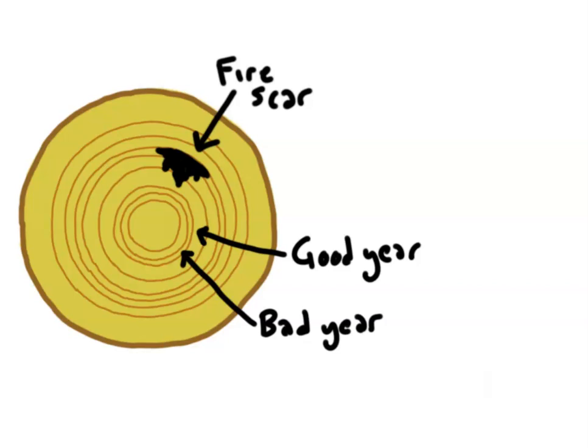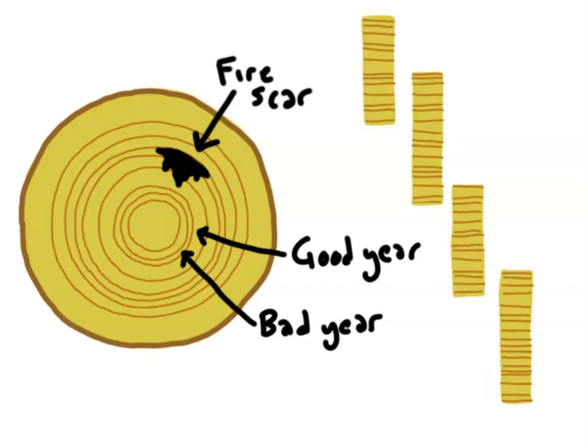Because the pattern of thick and thin rings is similar in all trees from an area, we can line up different trees, some of which died a long time ago, to create a series, extending our data into the past. Tree ring records can stretch back centuries in some cases.